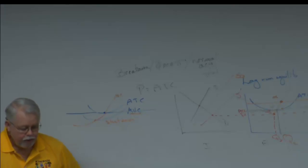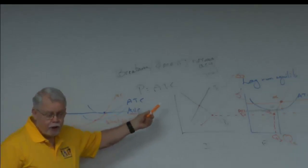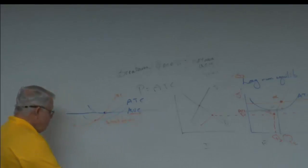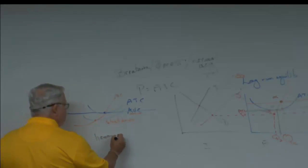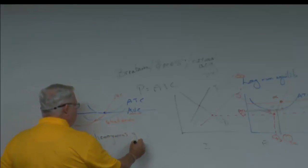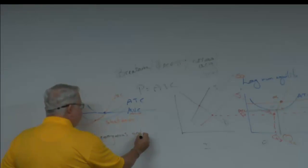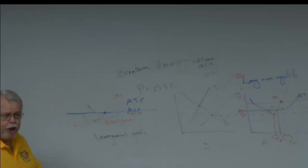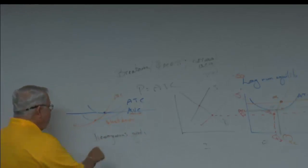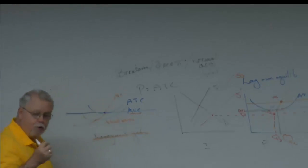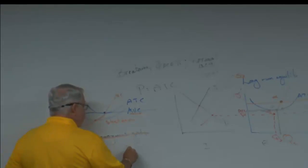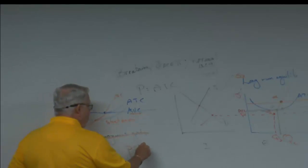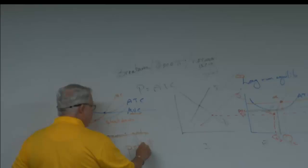When we get into monopolistic competition, remember those four assumptions? The assumption about homogeneous goods — everybody selling the same product — that's the assumption we violate. We say: what if every company could produce their own unique product? That's the key term: product differentiation.